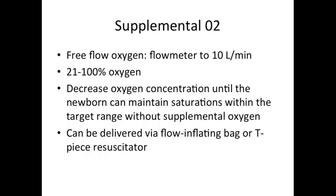For supplemental oxygen, set the flow meter to 10 liters per minute. FiO2 can be adjusted from 21 to 100% as needed. Decrease the oxygen concentration until the newborn can maintain saturations within the target range without supplemental oxygen. Supplemental oxygen can be delivered via a flow inflating bag or a T-piece resuscitator.